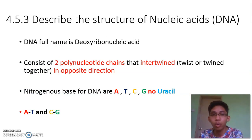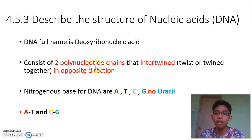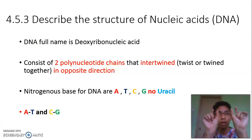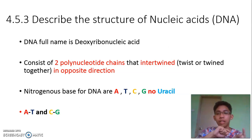Describe the structure of nucleic acid DNA. DNA — full name deoxyribonucleic acid — consists of two polynucleotide chains that intertwine, meaning they twist together like a double helix. The two strands cross between one another in opposite directions — one strand goes downward and one strand goes upward.